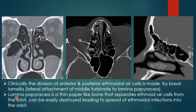Another important structure is the lamina papyracea, which is a thin paper-like bone. It is the only division between the orbit and the ethmoid air cells. Because it is very thin, it can easily be destroyed, leading to spread of ethmoid infection into the orbit — meaning ethmoid sinusitis can lead to orbital cellulitis.